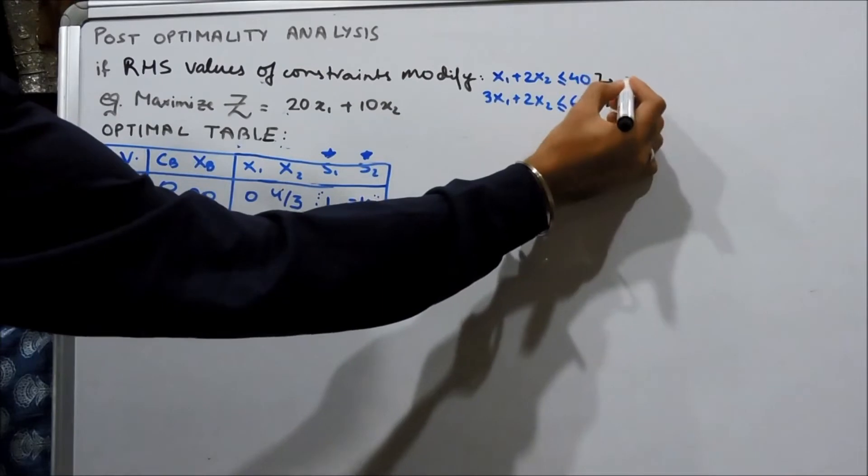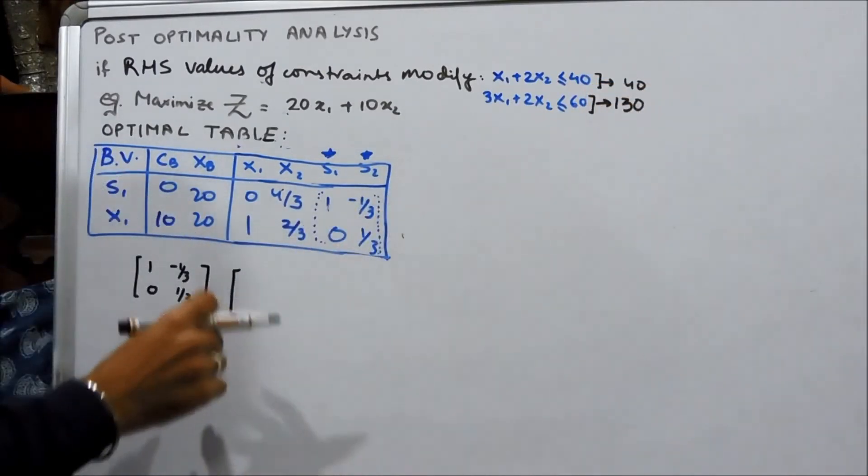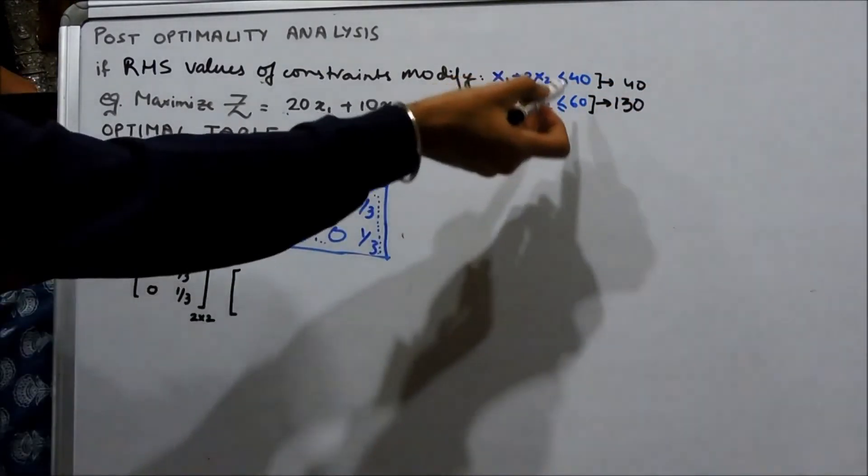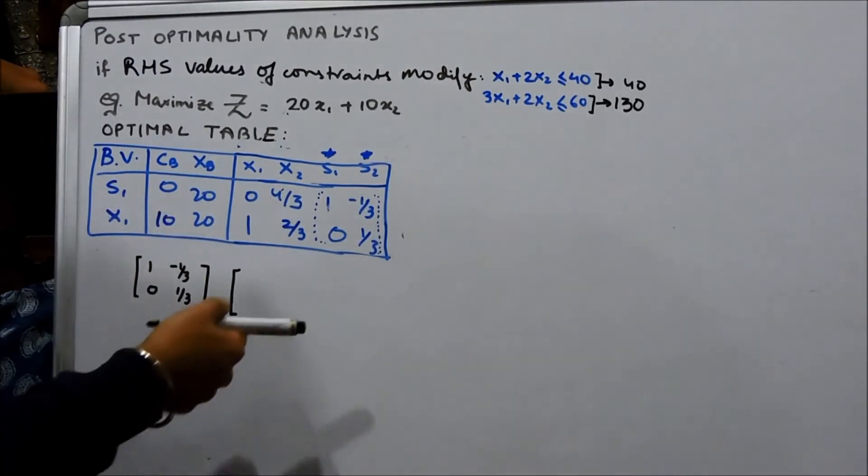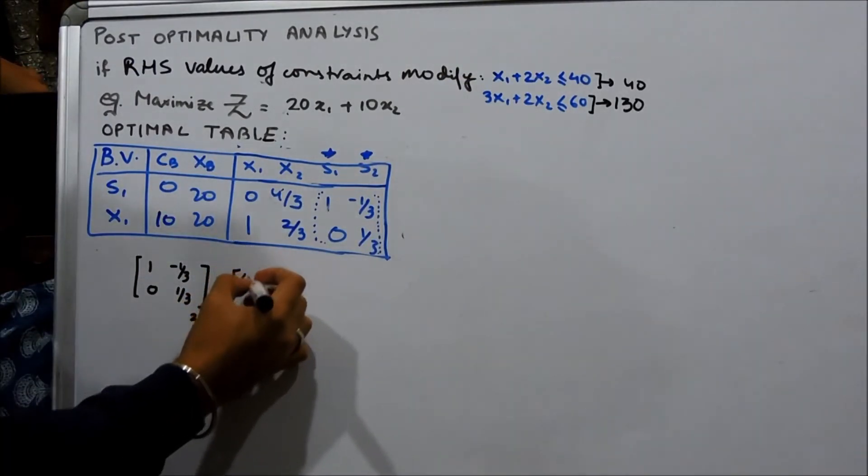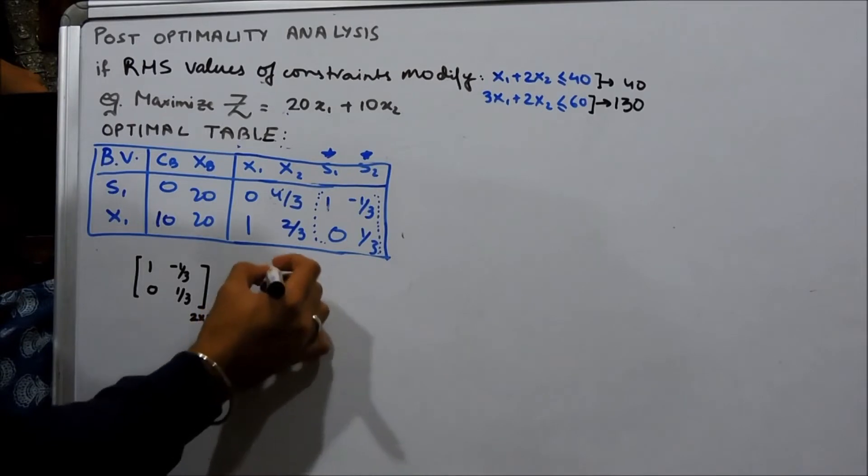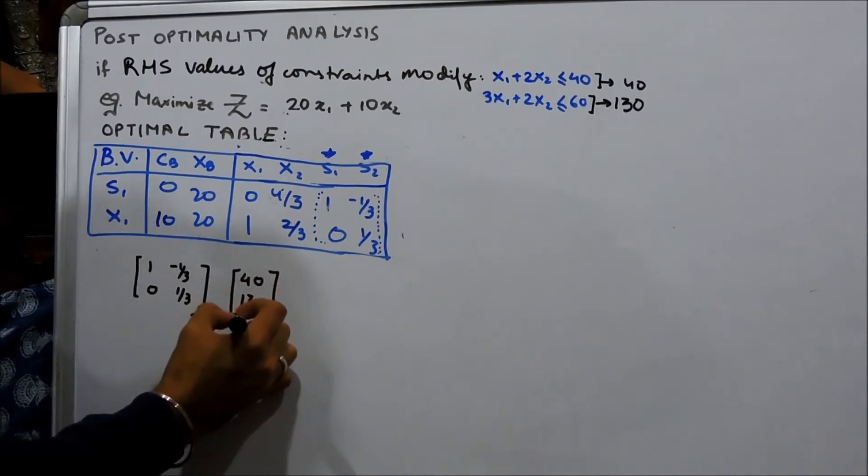We can also change this. If a question asks to change both of them, there is no problem. This method works both ways. We have 40 and 130 which is a 2 by 1 matrix.